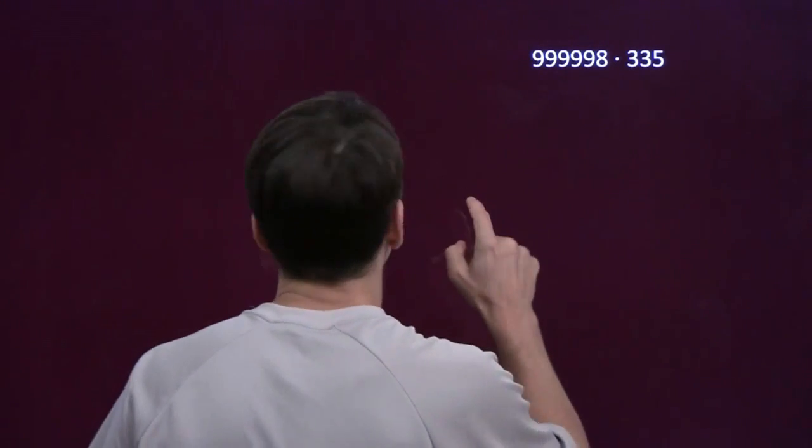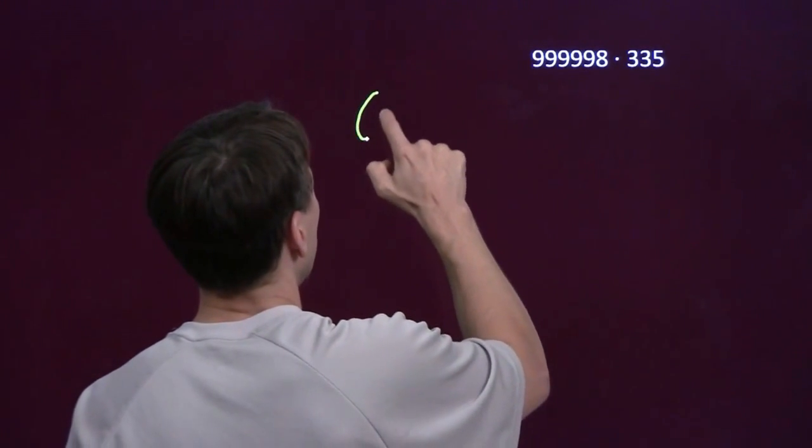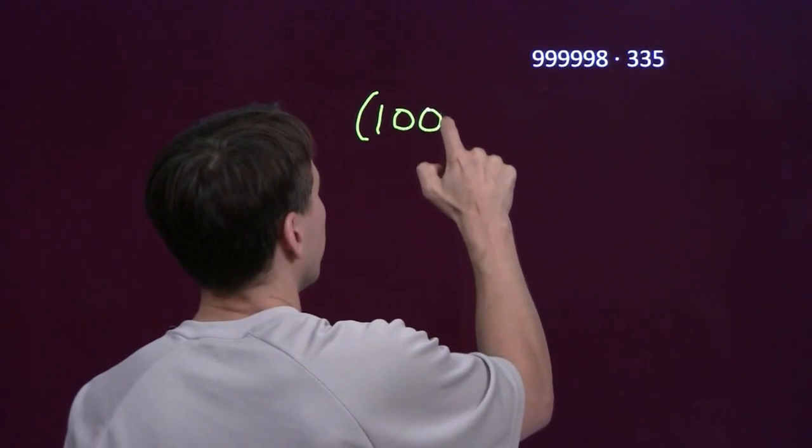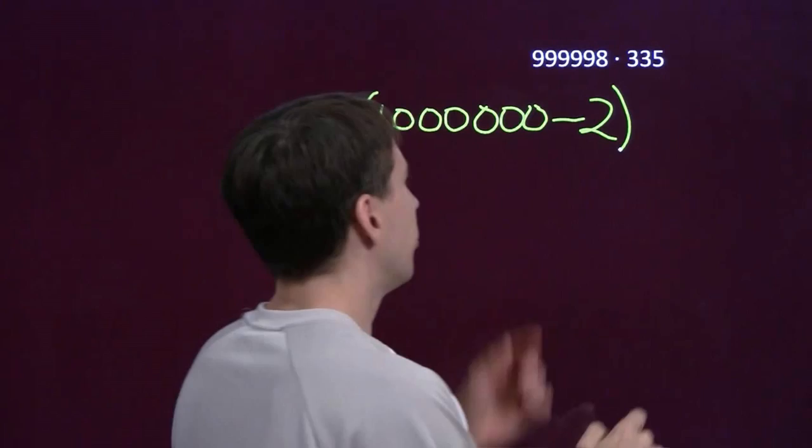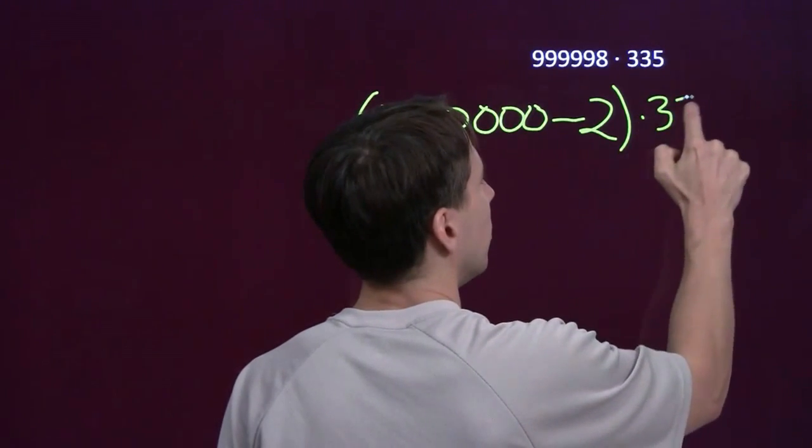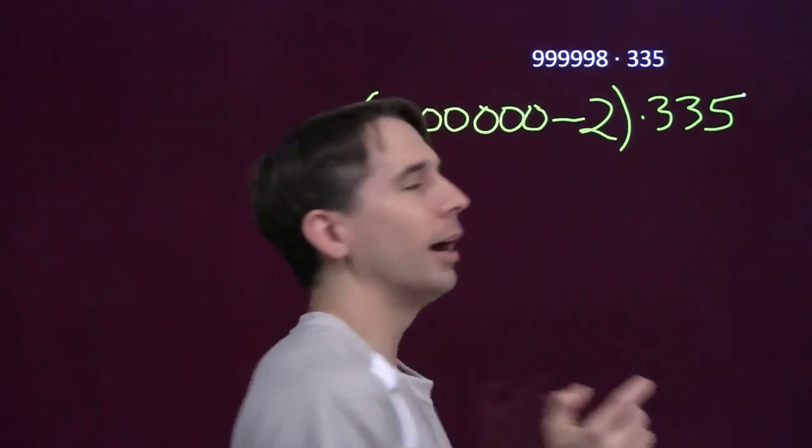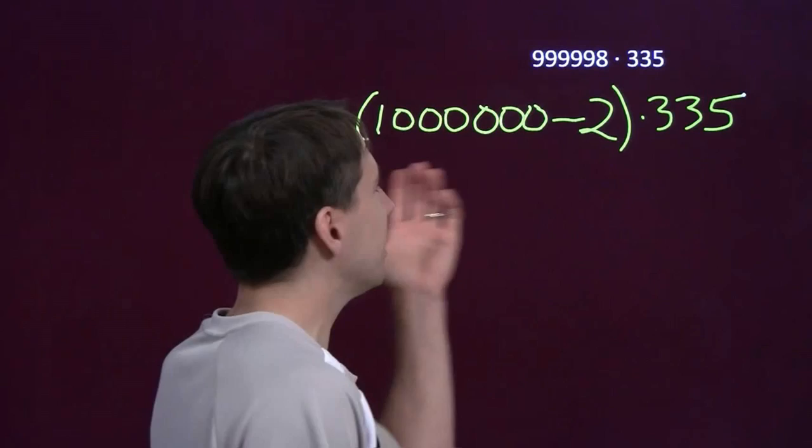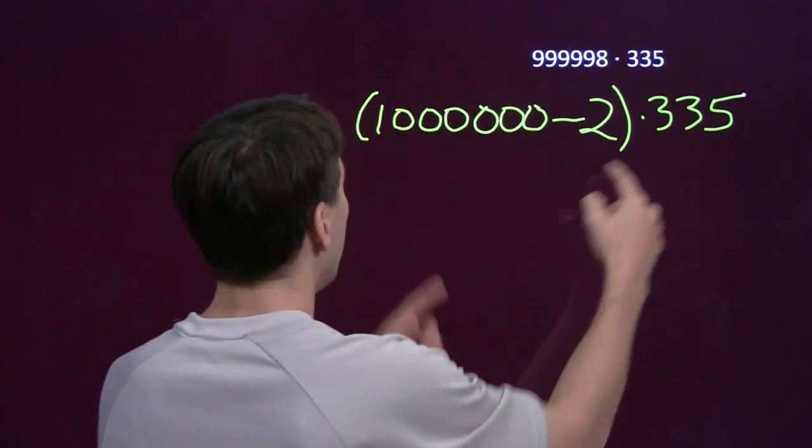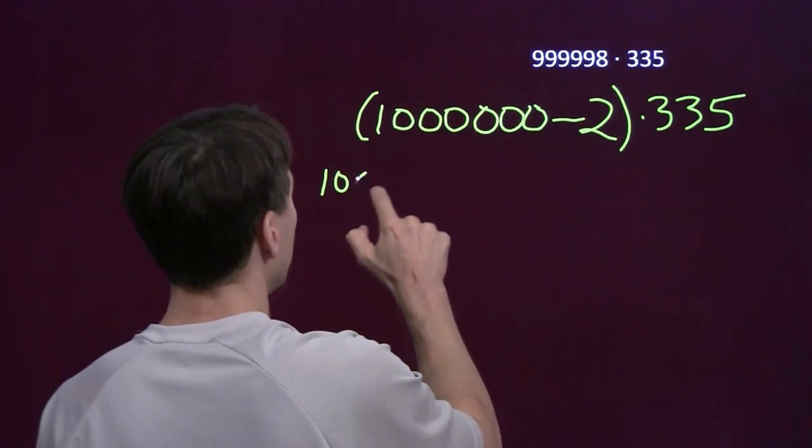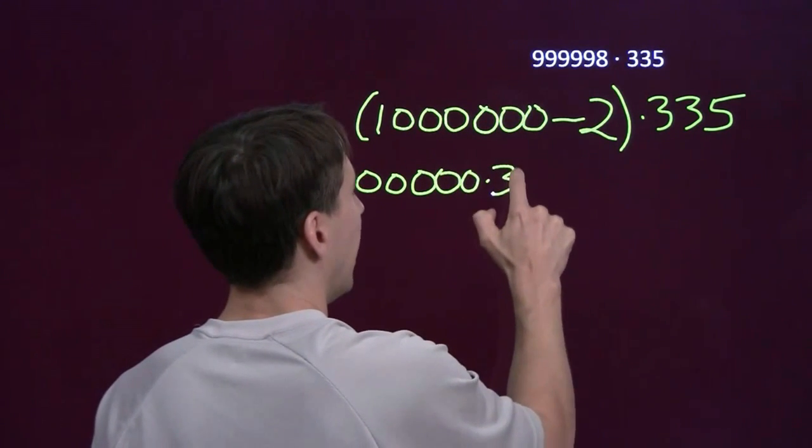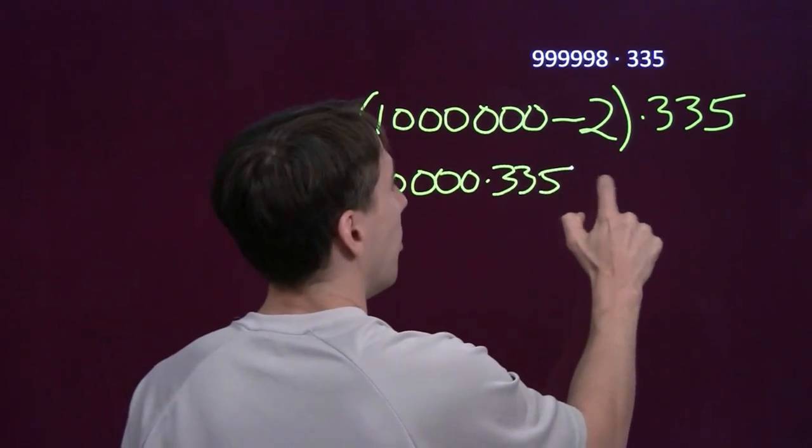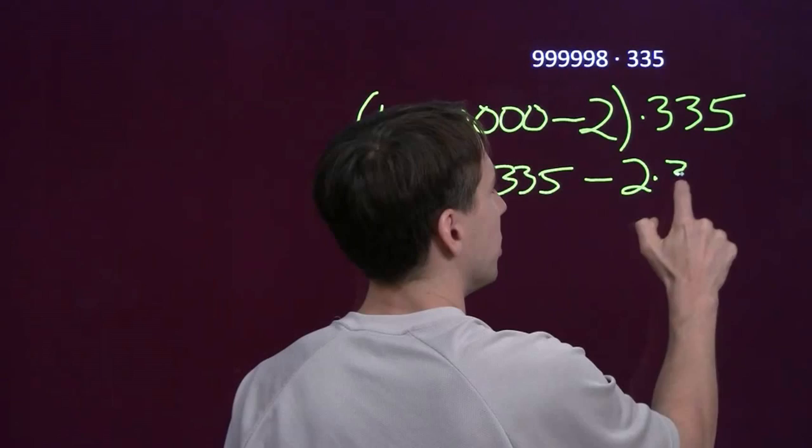Well, I'm going to write this down in terms of something, well, at least I know how to deal with a million. So I'm going to write, it's a million minus two times the three-thirty-five. Ah, distributive property again. I can expand this to a million, all those zeros, times three-thirty-five minus two times three-thirty-five.